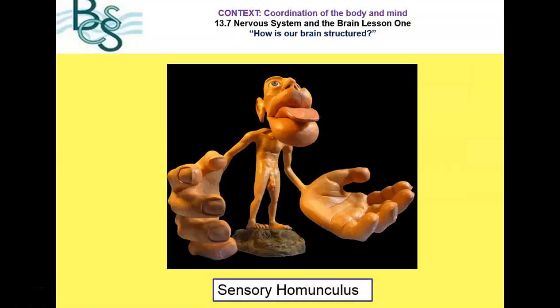This image is called a sensory homunculus. Scientists have enlarged areas of the body which provide the most sensory information to the brain. You can see that the hands provide the largest amount, followed by the lips, tongue, eyes, and nose. These are the five senses we learn about as children because they provide the most information to our brain.